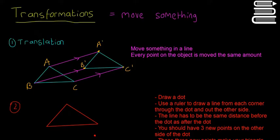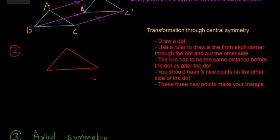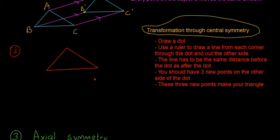So the next one we're going to look at is transformation through central symmetry. So first thing you have to do is pick your point — we're going to draw this dot. Then we use a ruler to draw a line from each corner to the dot. So this one here is going to be like that, this one here is going to be like that, and this one here is going to be like that. Normally it's better when you do a dotted line.